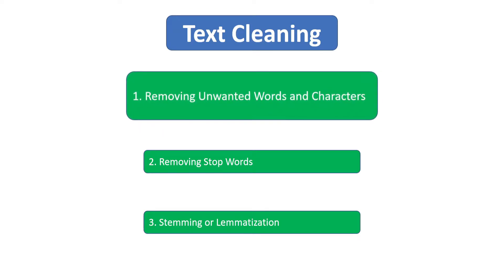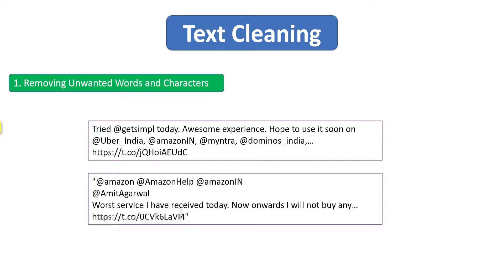Now let's see how we can remove unwanted words and characters. Let's say we are doing sentiment analysis on Twitter data. For that we have taken two sample tweets. The first tweet reads: tried at Get Simple today, awesome experience, hope to use it soon — and mentions at Uber India, at Amazon, and some URL. The objective is to figure out the sentiment of this tweet. For that, this portion is enough: 'tried today, awesome experience, hope to use it soon.' The rest can be ignored.